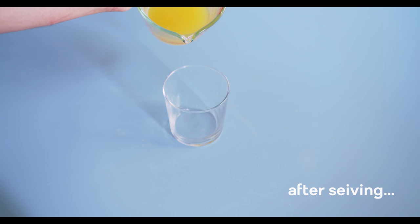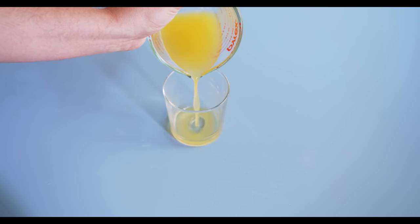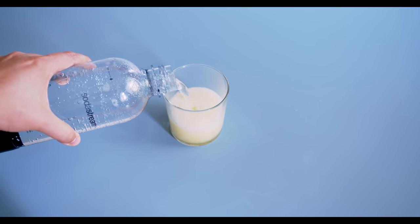We're ready to make our Mountain Dew. Just pour in anywhere between one to one and a half tablespoons of the syrup, and then add in the soda water. And that's it.